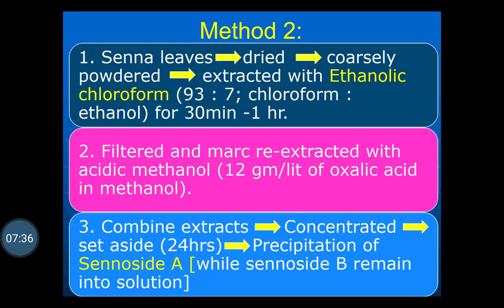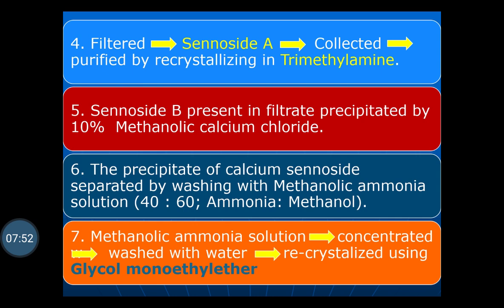Sennoside A precipitates out while the other sennosides remain in solution. The precipitated Sennoside A is separated by filtration and purified by recrystallization with trimethylamine, yielding pure Sennoside A.